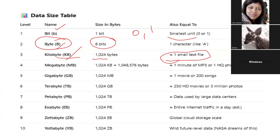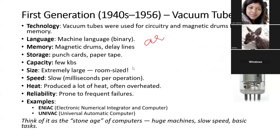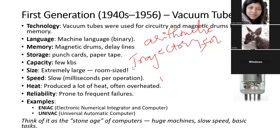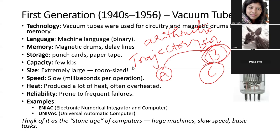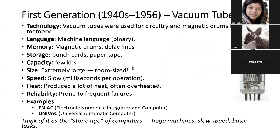Today, even one selfie is several megabytes. First generation computers also calculated trajectories for atomic bombs — for example, determining the correct path so a bomb lands on the intended target city rather than another. They were used for such calculations as well as weather prediction and simple computations.